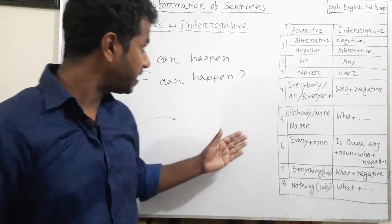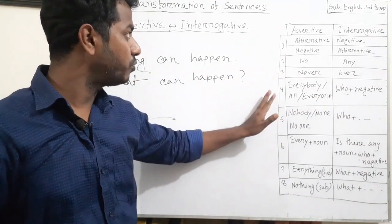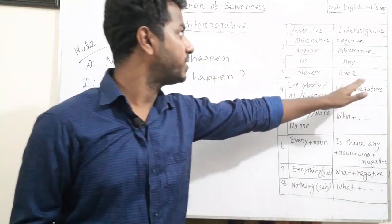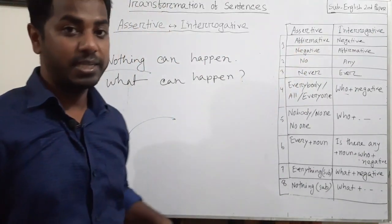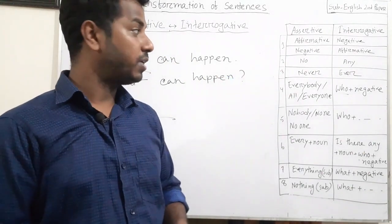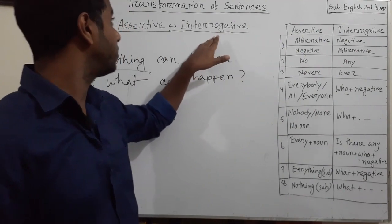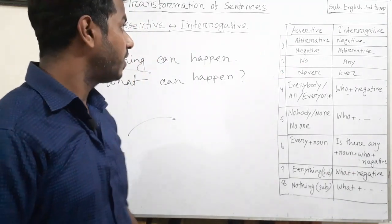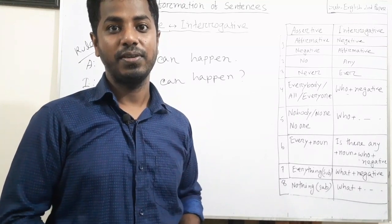Dear learners, in my today's class I have discussed how to make an assertive sentence into an interrogative sentence by following these charts and rules with examples. If you want to make an interrogative sentence into assertive sentence, just follow these rules in reverse. I hope you have enjoyed the class and noted all the rules and examples. Practice yourself at home using this chart. I hope we will see you in the next class. Thank you. Allah Hafiz. Stay safe and sound.